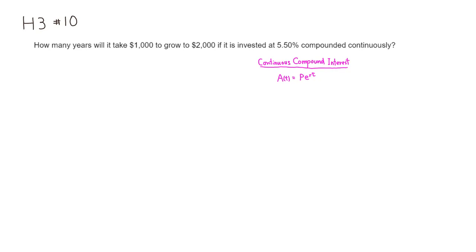So let's identify each given value. First one, you can see that here, $1,000. So this is the initial investment, so this is P.